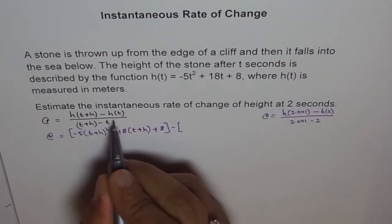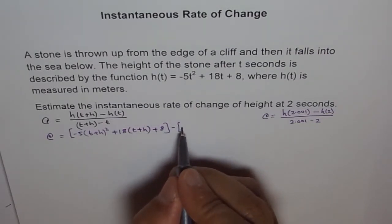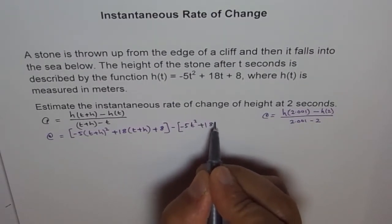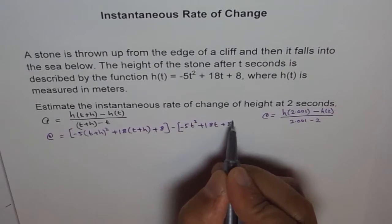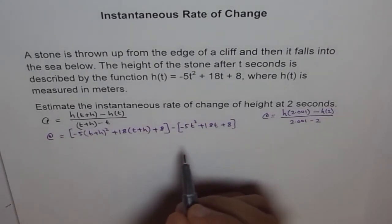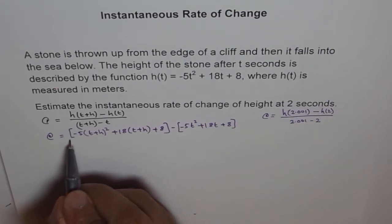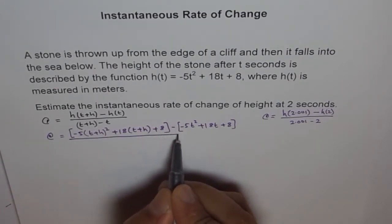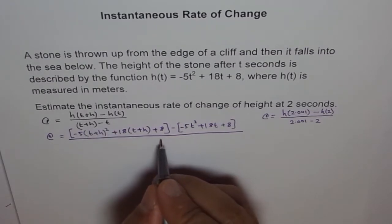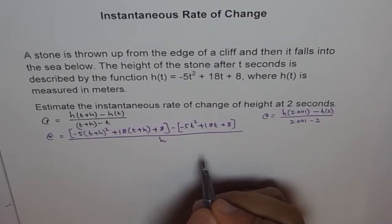Minus h(t), which is the function given. So, given function is -5t² + 18t + 8. And all this is divided by this. So, all this is divided by t+h - t, which is h.